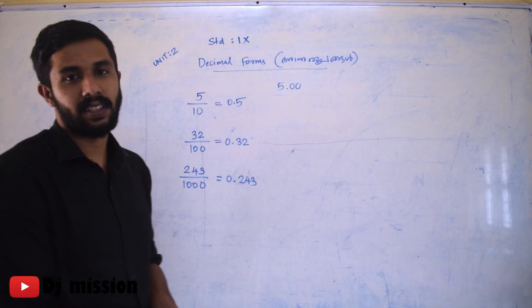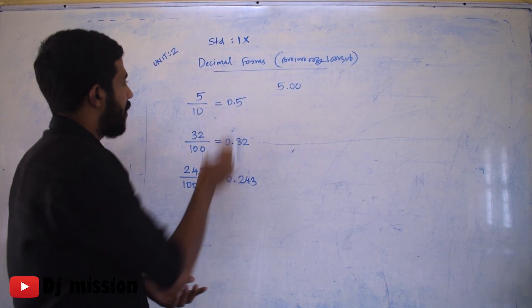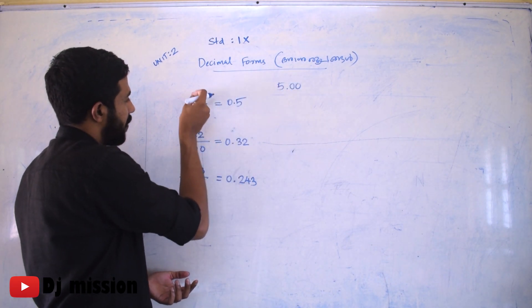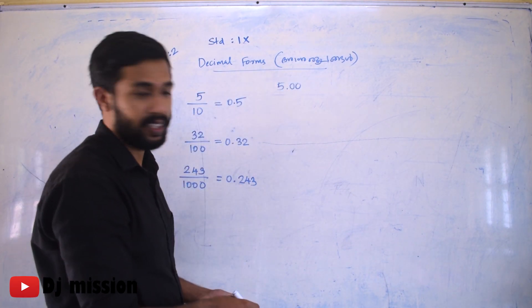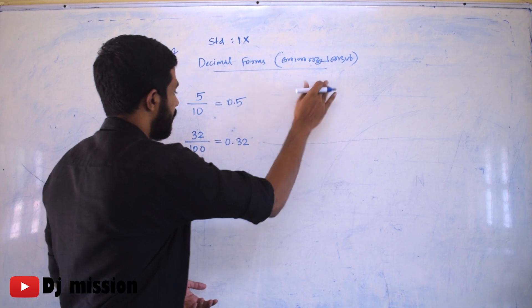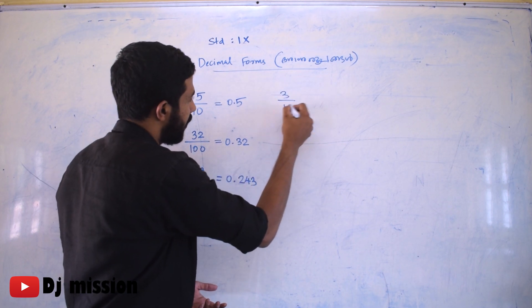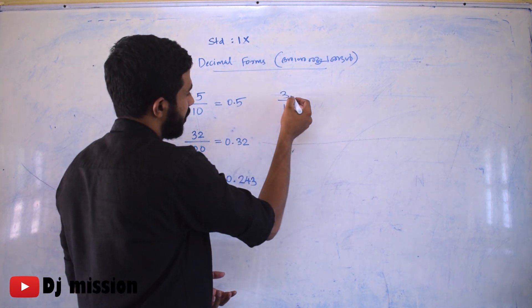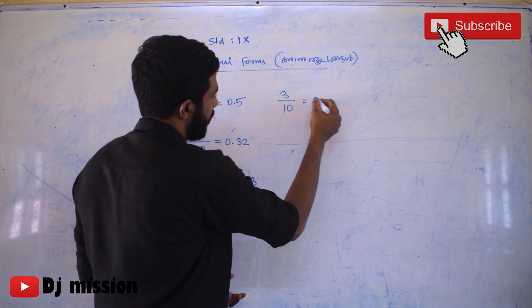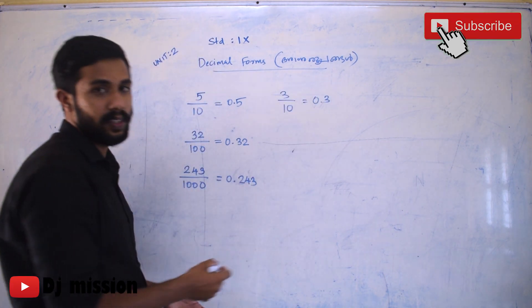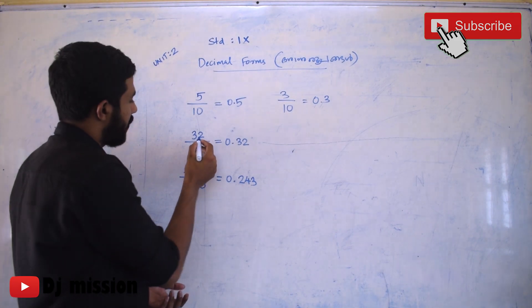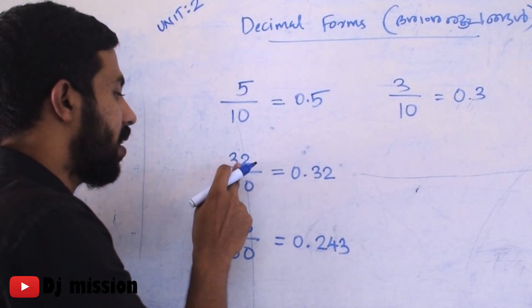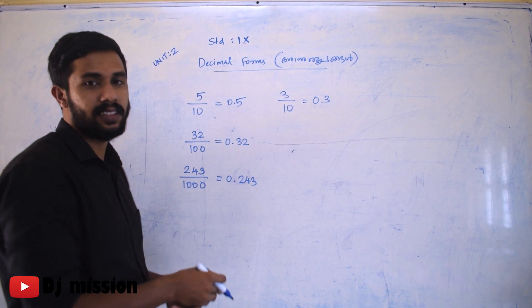If we have the number, we divide by 10. For example, 3 by 10 — dividing by 10 gives 0.3. So 32 by 100 — the denominator is 100.